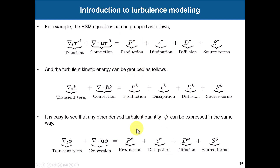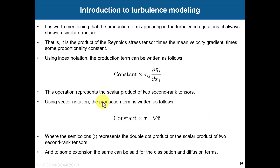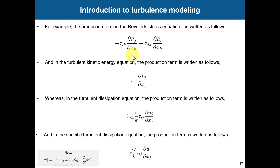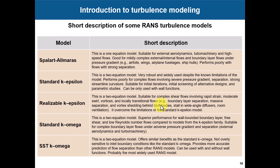What changes between turbulence models are the coefficients. Very important: the production term is a critical term in the transport equation of any turbulent quantity. It is expressed as the Reynolds stress tensor double-dot product of the velocity gradient, times a constant, giving a scalar quantity. It's always computed like that - very important. The Reynolds stress equation takes this form; the turbulent kinetic energy k takes this form; turbulent dissipation epsilon takes this form; and the specific turbulent dissipation omega, for k-omega, takes this form. This is a key way to validate turbulence models.